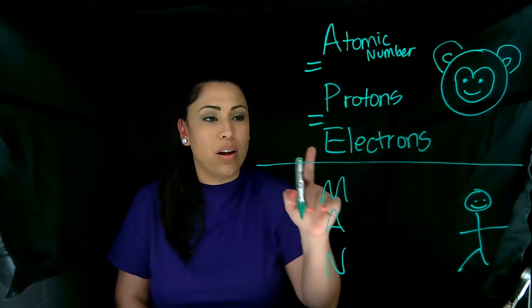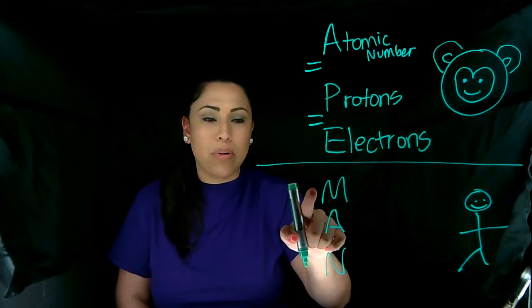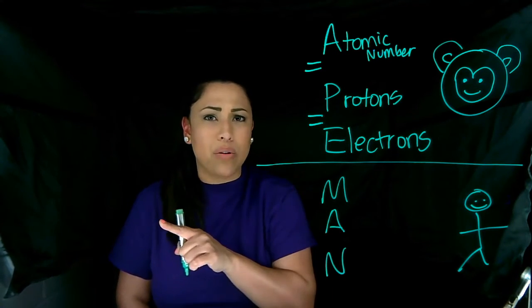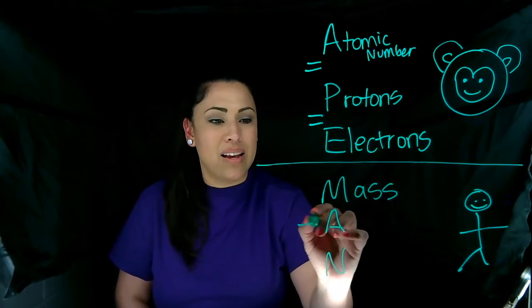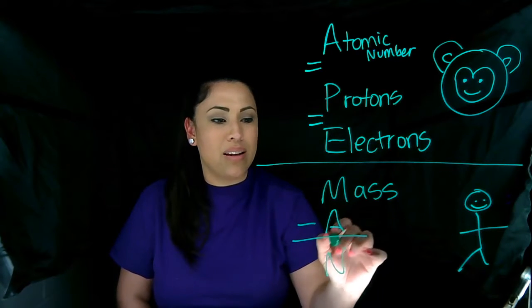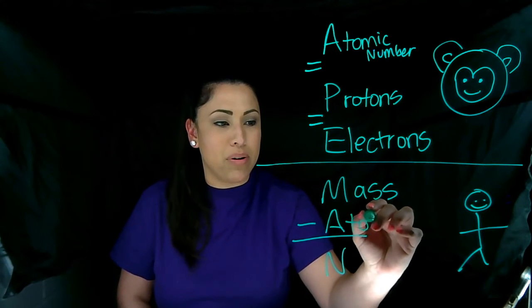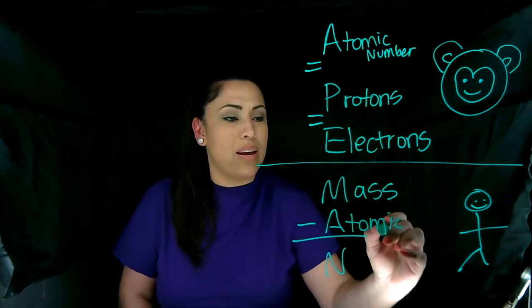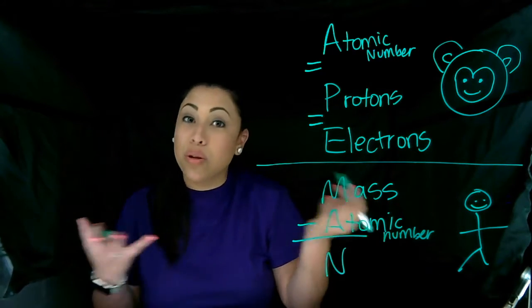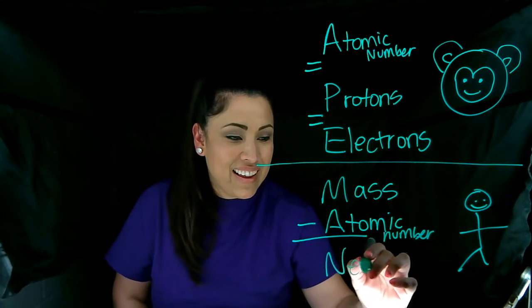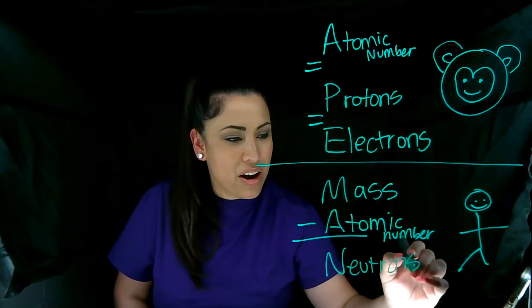Now, down here, what number haven't we used from the tile notes? This is going to be our mass minus our atomic number. We just bring down that number. It's going to be equal to, last but not least, our neutrons.